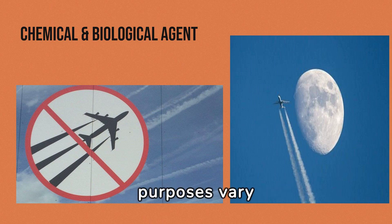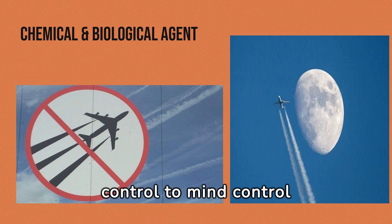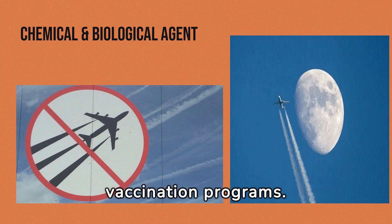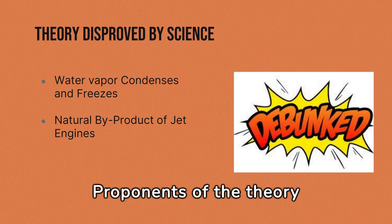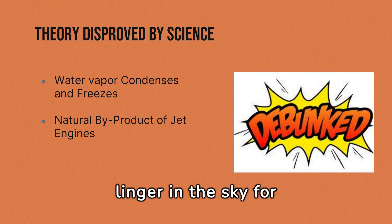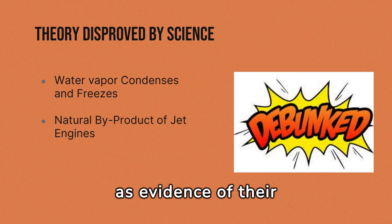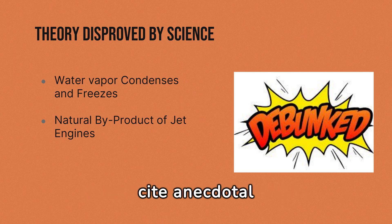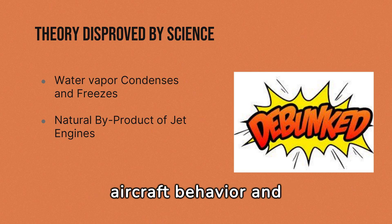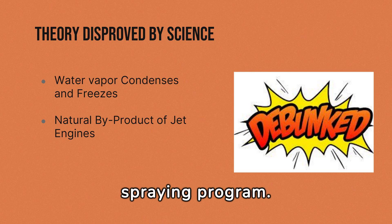These alleged purposes vary widely among proponents of the conspiracy, ranging from weather modification and population control to mind control and secret vaccination programs. Proponents of the theory often point to the persistent nature of contrails, which can sometimes linger in the sky for hours and spread out to form cirrus-like clouds, as evidence of their supposed nefarious nature. They also cite anecdotal observations of unusual aircraft behavior and changes in environmental conditions as further proof of a covert spraying program.